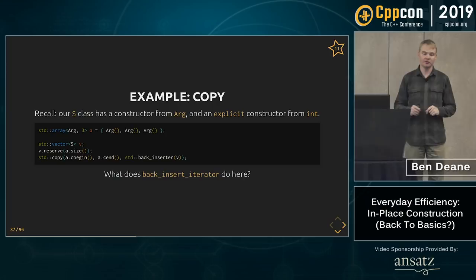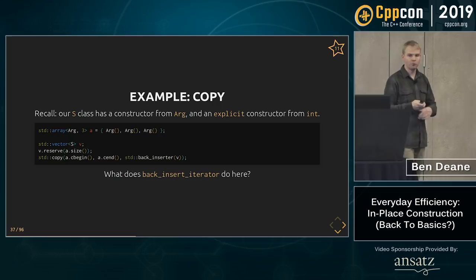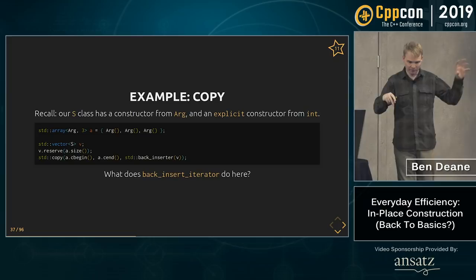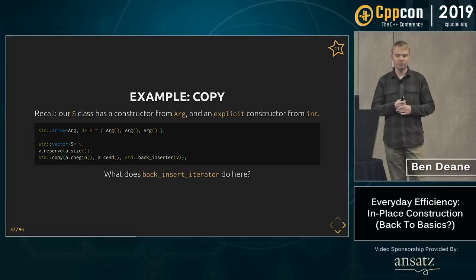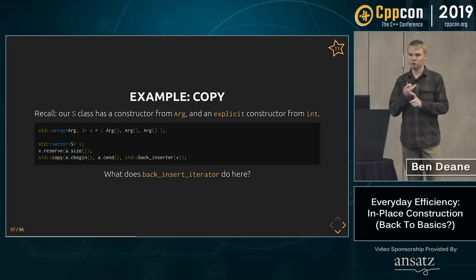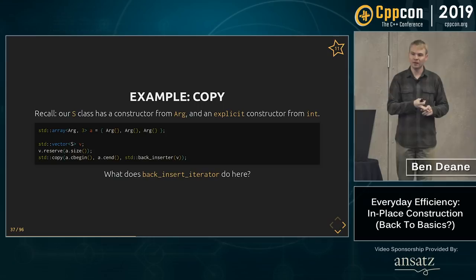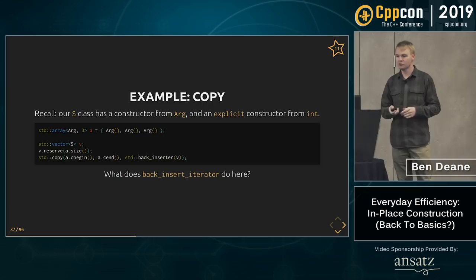Now, we're trying to copy an array of arguments to S's constructor and make a vector of S's. What's happening with this typical code using back_inserter? back_inserter is going to call push_back. So for each of three items, we're going to get a construct, a move (because it's an rvalue triggering the rvalue overload of push_back), and a destruct of the temporary. That happens three times — you're getting an extra move, you're not getting in-place construction.